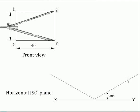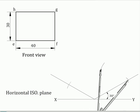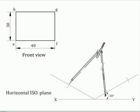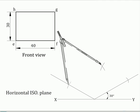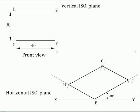Also locate point E. Now join EF and GH. Draw the vertical and one 30-degree making isometric axis.